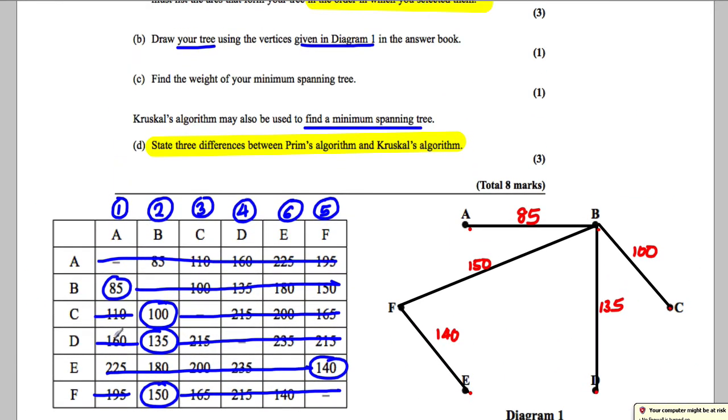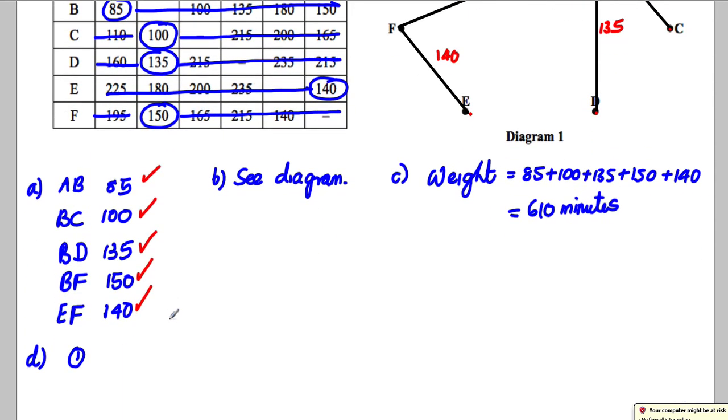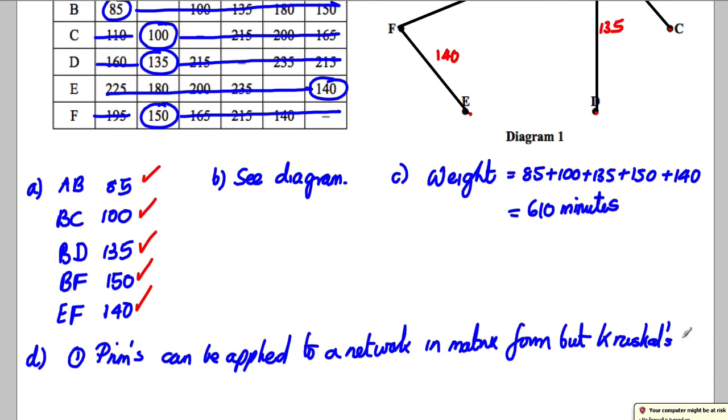So you can find a minimum spanning tree using Prims using a matrix but you can't using Kruskal's. That's a nice easy one to remember. So we can just state that Prims can be applied to a network in matrix form but Kruskal's can't. That's a nice easy one to remember especially as this question had a matrix in it.